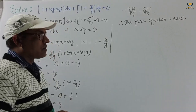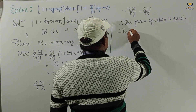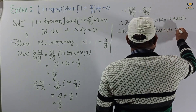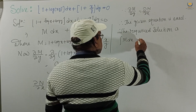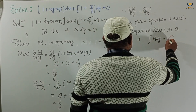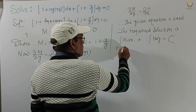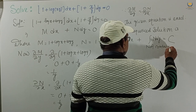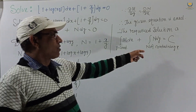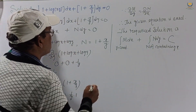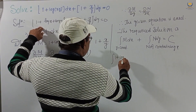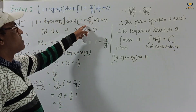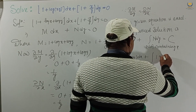Now we find the solution. The required solution is: integration of M dx (with y constant) plus integration of N dy (terms not containing x) equals c. M is 1 plus log x plus log y, so we integrate (1 + log x + log y) dx. The term not containing x in N is just 1, so we add integration of 1 dy.